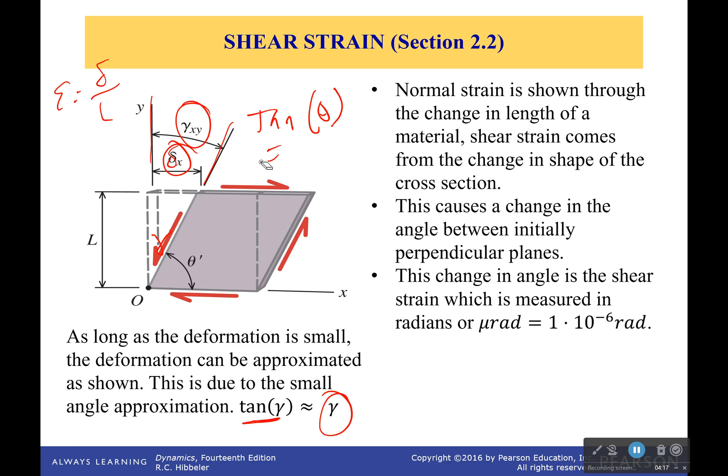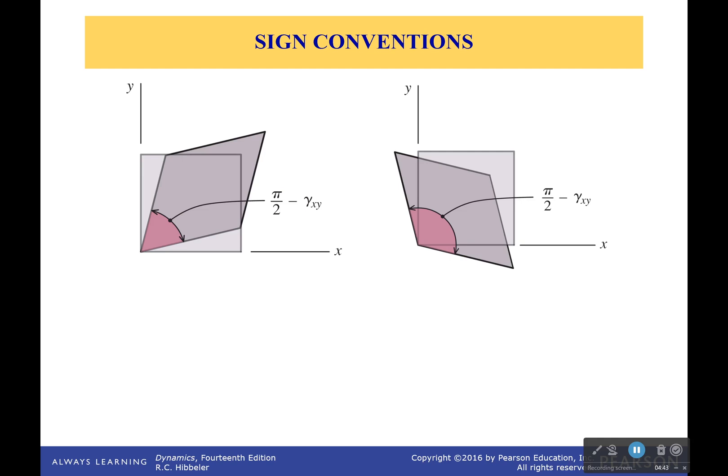But we're just going to say, since our strain is normally, I would say normally, small, we can make this small angle approximation. If the strain is not small, you can't do that. Okay? If the strain is not small, you can't normally do that. So just remember, this is only for small strains, which will be the case in most situations for us.